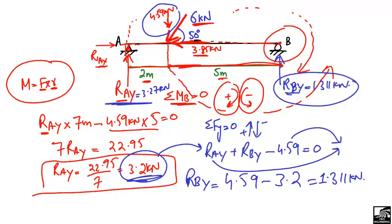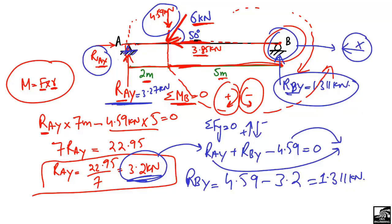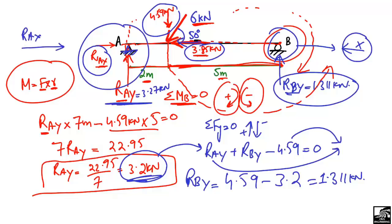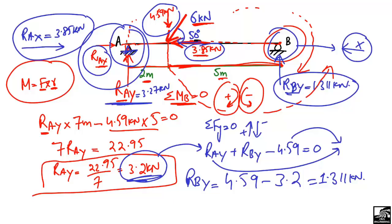Now for the horizontal reaction: support B is a roller support, so it cannot take any horizontal load — it can only carry vertical load. Support A is a hinge support, so it can take horizontal load. Therefore, the entire horizontal component of 3.85 kN is transferred directly to support A, making RAx = 3.85 kN without any further calculation.